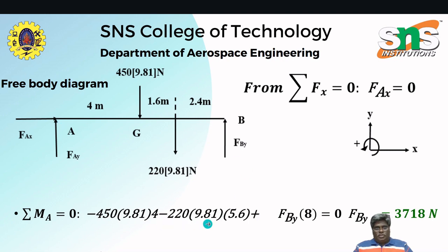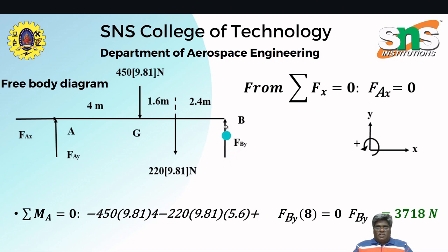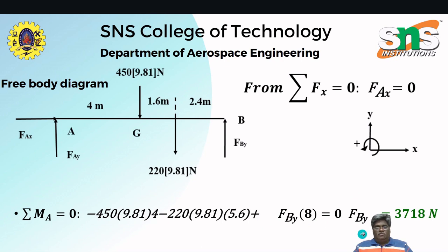The moment equation is: −220 × 9.81 × 5.6 + the reaction force FBY × 8 = 0. Solving this equation, we obtain the reaction force at the roller support B: FBY = 3780 N.